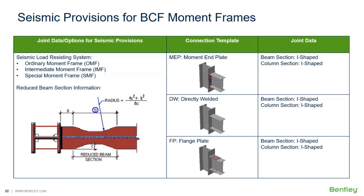Within RAM Connections Standalone we have three different types of connections available for beam to column moment frames to assist with seismic provisions. These would include your moment end plate, a directly welded connection, and also a flange plated connection.